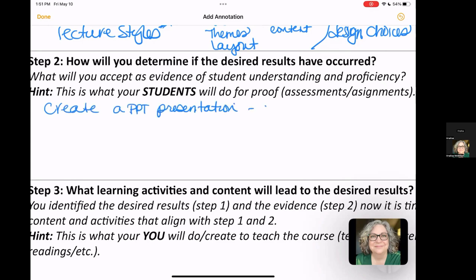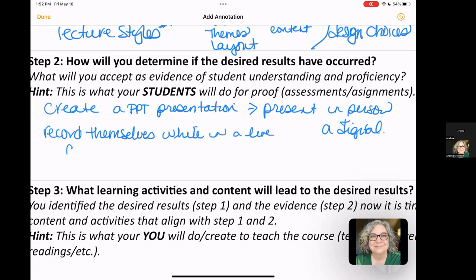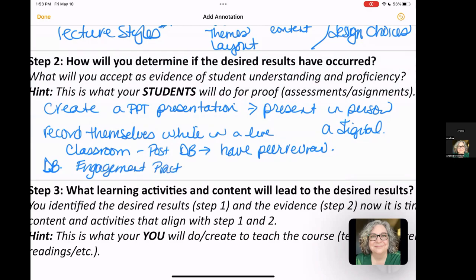So, for example, I would have the students create a PowerPoint presentation. I would also have them present it in person and a digital one. I think another thing I might do is have them record themselves while presenting in a live classroom or at least a mock live classroom posted to the discussion board and then have peers review. So, that is another assessment. I would also have a discussion board where they are probably talking about those engagement practices. I don't quite know what it looks like right now, but that's okay because I know I will have them do a discussion board.